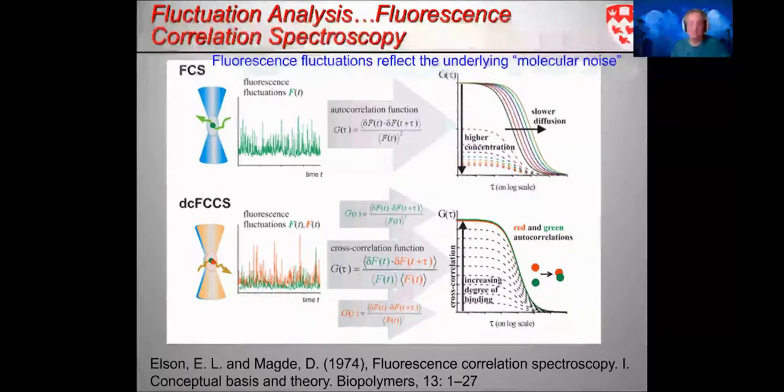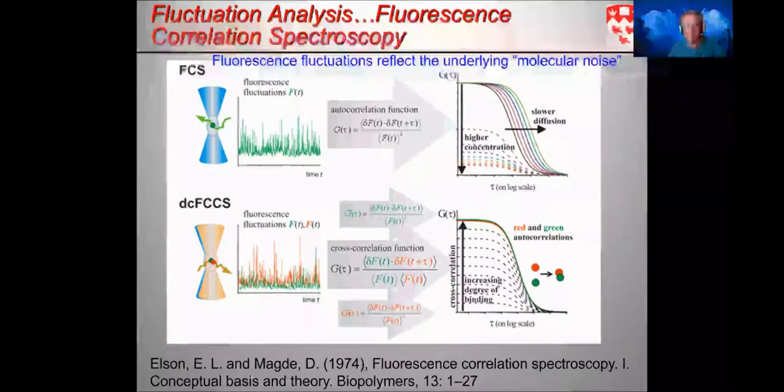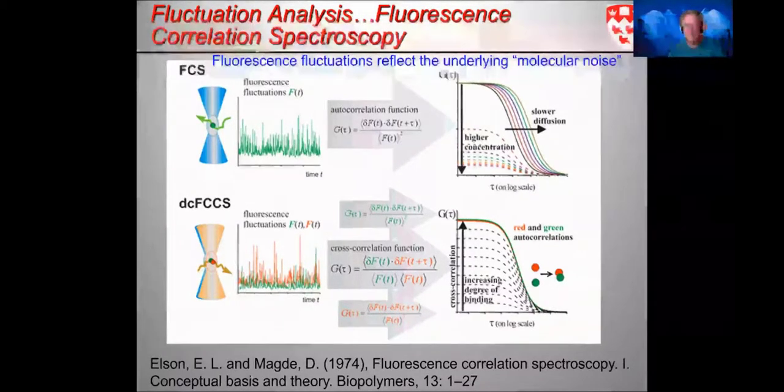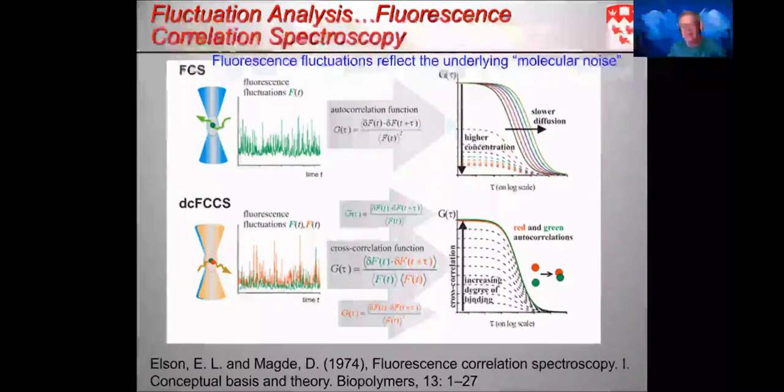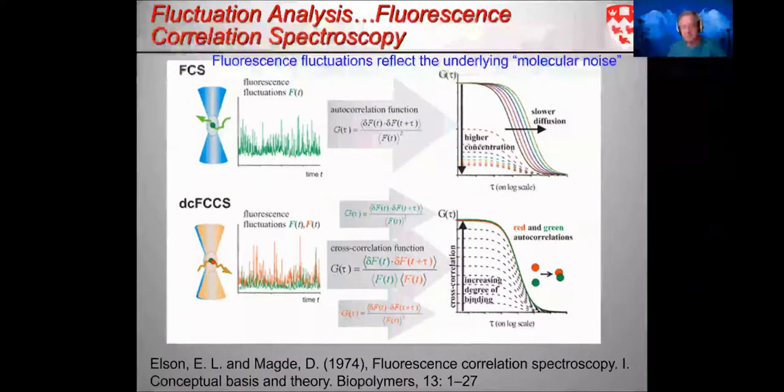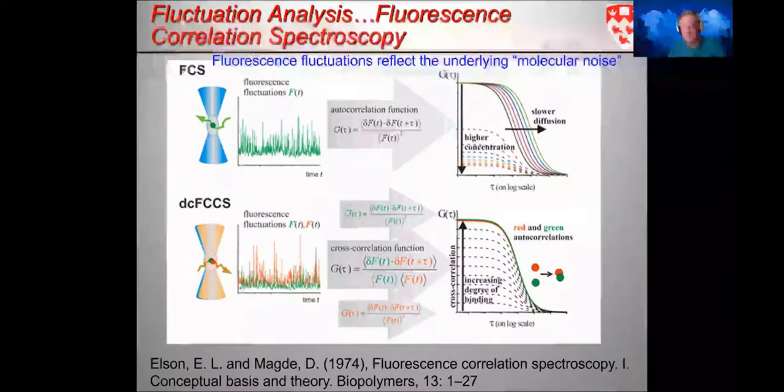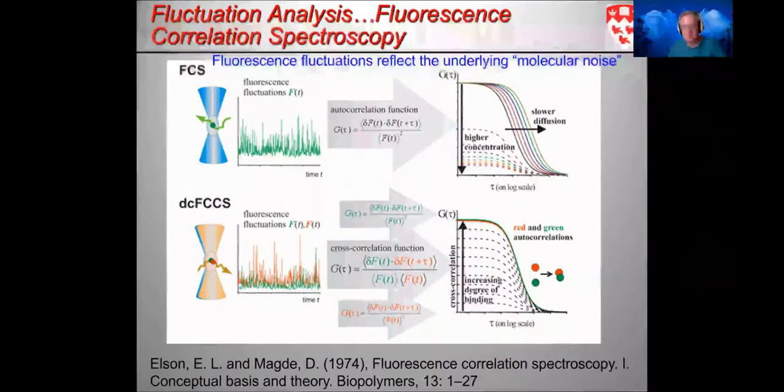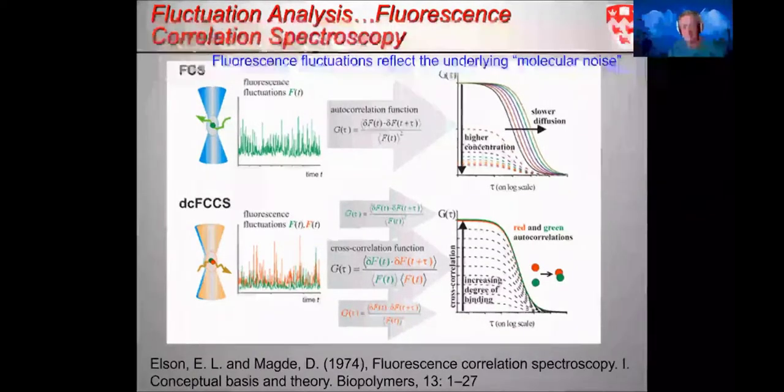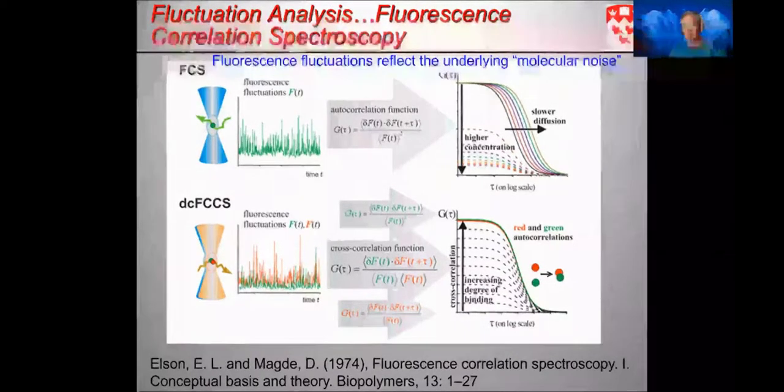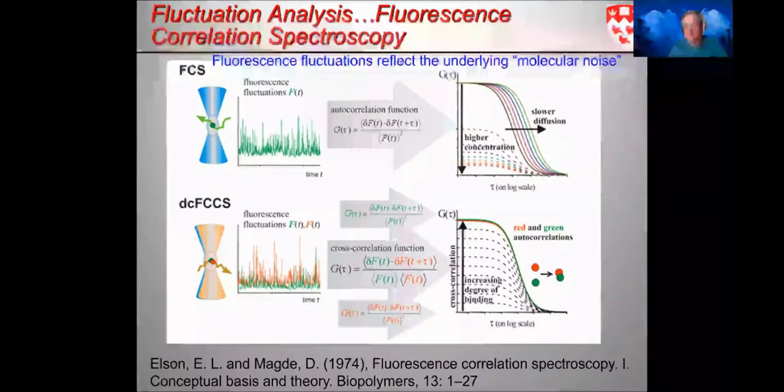One can extend the correlation spectroscopy analysis to two color or fluorescence cross correlation spectroscopy, as was pioneered by Petrus Schwille. Here you label two different biomolecules with a green and a red label, for example, and you collect both signals from equal focal volume in the same point. You look at the cross fluctuating signals and characterize them by a cross correlation function. This gives transport dynamics for the co-localized species.